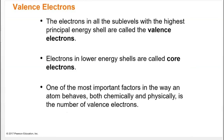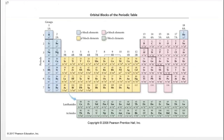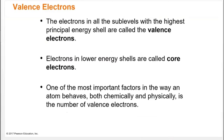Based on the electron configuration we can determine the number of valence electrons, which are simply those in the highest energy level. For silicon, the electrons in the 3s and 3p are the highest energy level, so those are the valence electrons. For scandium (4s2, 3d1), there are only two valence electrons since 4s is the highest energy level. The electrons in all other energy levels are called core electrons.